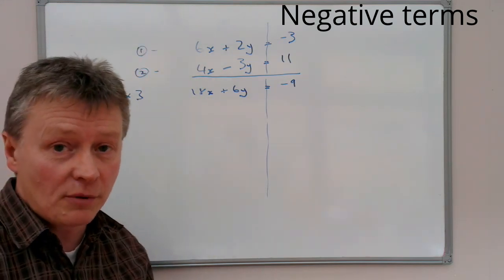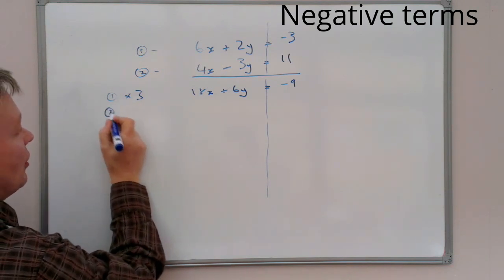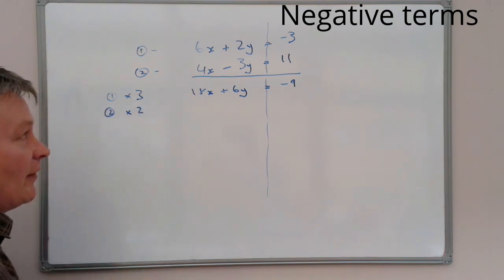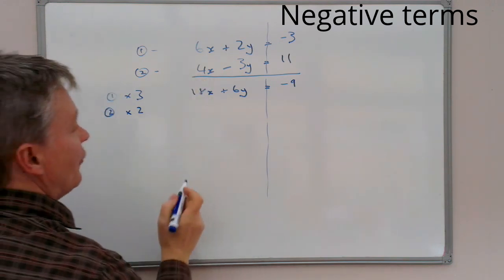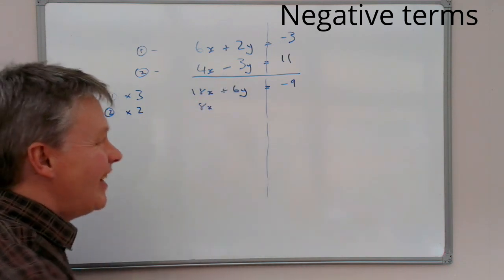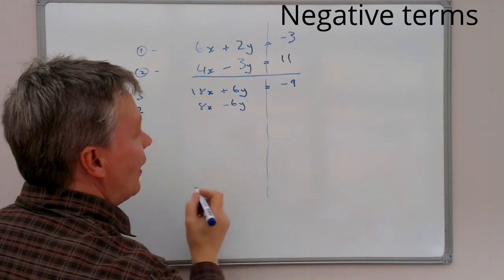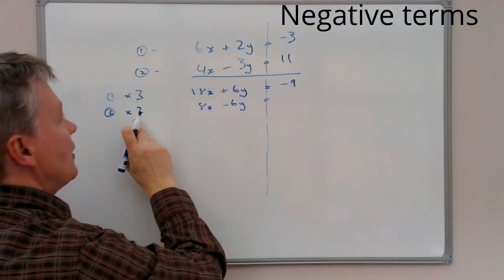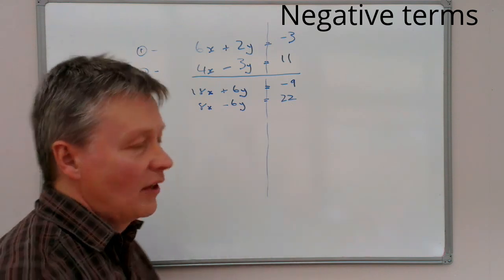With equation 2, I'm going to multiply that by 2. So 2 times 4x is 8x, 2 times negative 3y is going to be negative 6y, and 2 times 11 is 22.